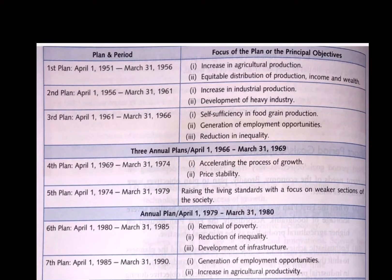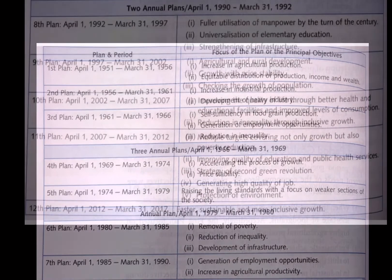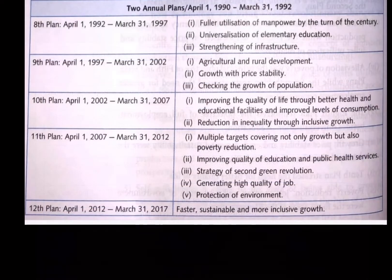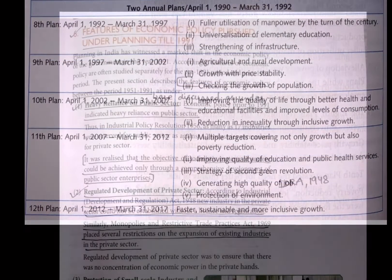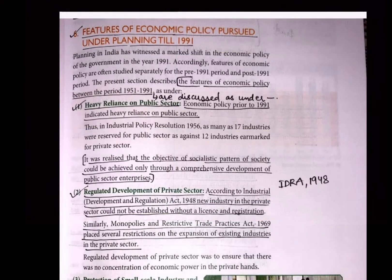The Sixth Plan, from 1980 to 1985, focused on removal of poverty, reduction of inequality, and development of infrastructure. The Seventh Plan, from 1985 to 1990, focused on generation of employment opportunities. After another gap, subsequent plans continued with a few objectives. Let's now discuss the features of economic policy pursued under planning till 1991.